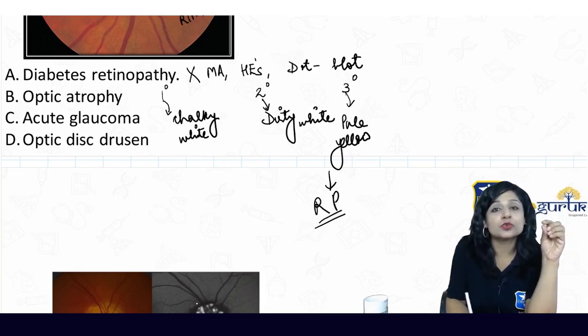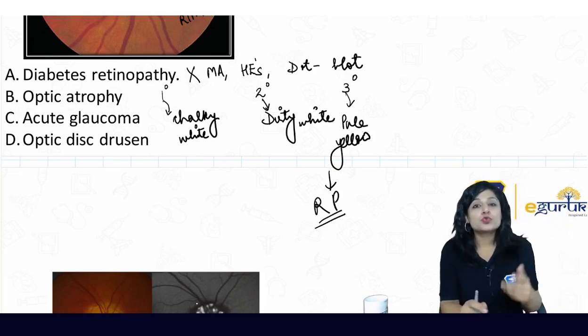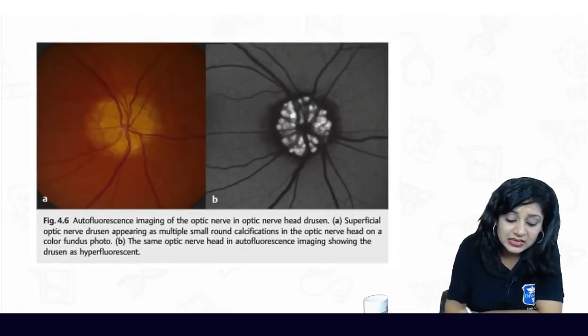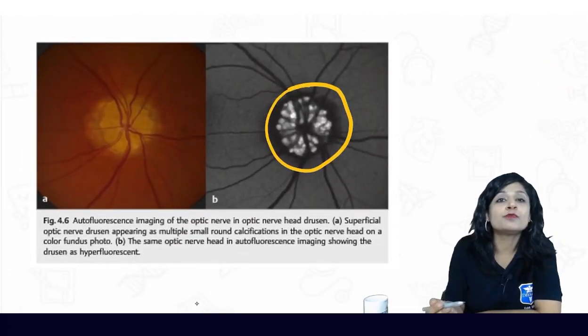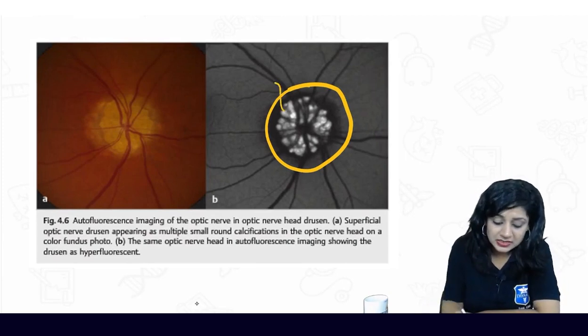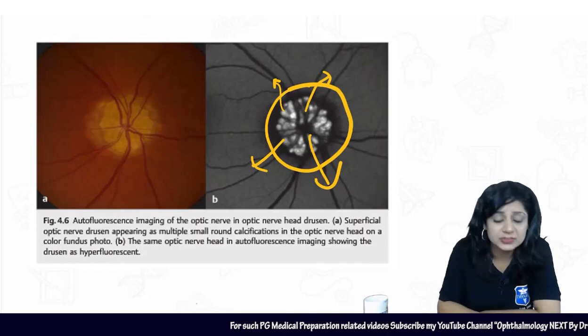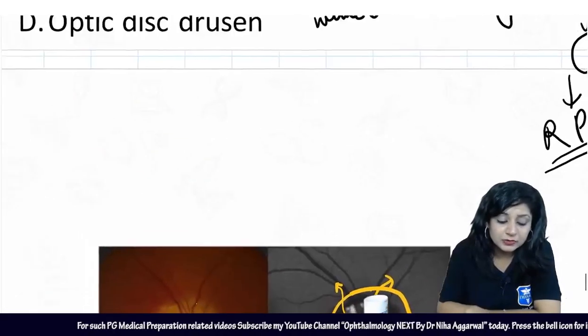Then the D option is optic disc drusen. So this is a photograph of the optic disc drusen. Can you see these lesions are autofluorescent? So you can see these drusen which are shining over the optic disc. These are called drusen.